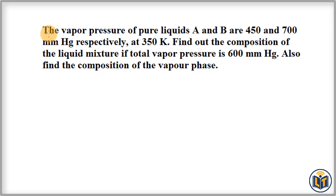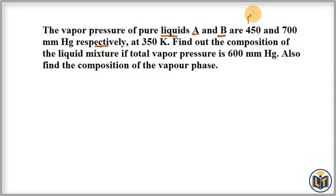The problem states that the vapor pressure of pure liquids A and B are 450 and 700 mmHg respectively. Here we can see that the vapor pressure of each liquid is given — P°A and P°B values.